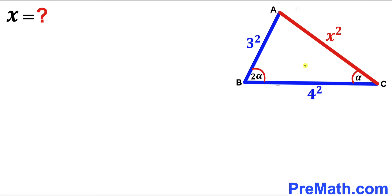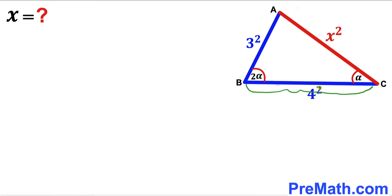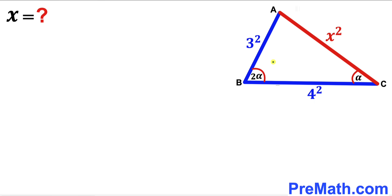Welcome to pre-math. In this video we have got a scalene triangle ABC such that its side length AB is 3² units, the side length BC is 4² units, and finally the side AC is represented by x². Moreover, angle ABC is 2 times alpha, angle ACB is alpha, and our task is to find the value of x.